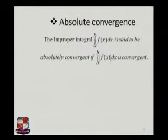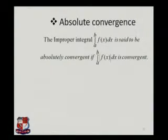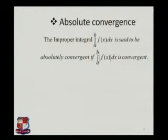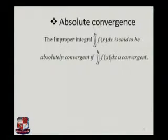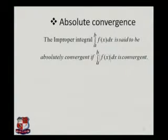This was the discussion about the first kind, second kind, and third kind of improper integral and their convergence. The next topic is absolute convergence. The improper integral from a to b of f(x) dx is said to be absolutely convergent if the integration from a to b of the modulus of f(x) dx is convergent. That means any integral is said to be absolutely convergent if its modulus integral is convergent.